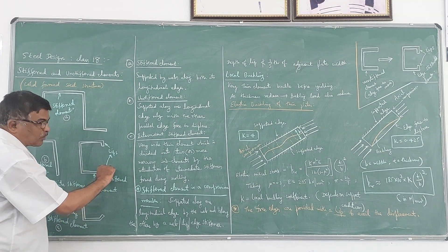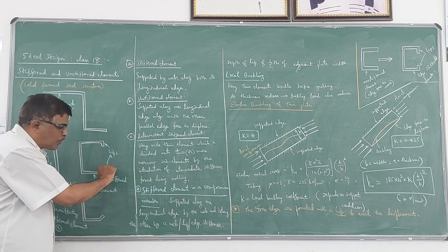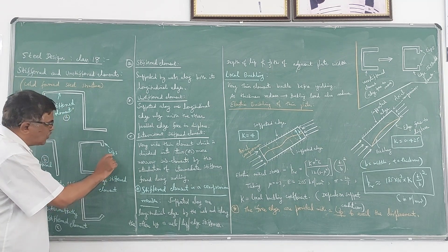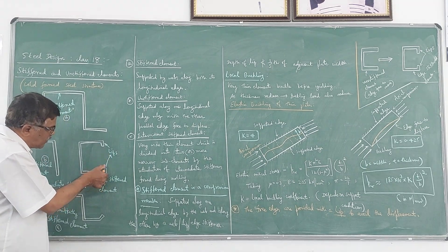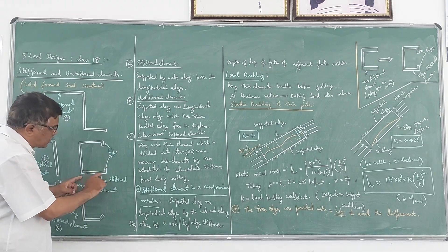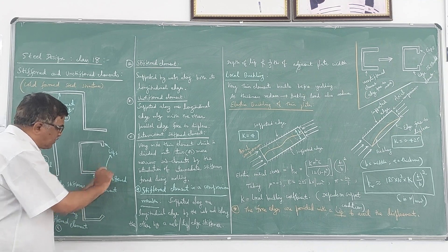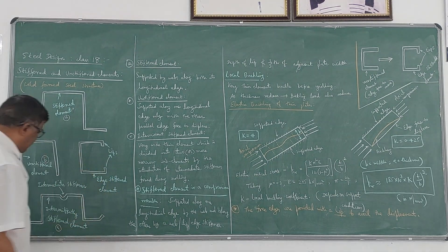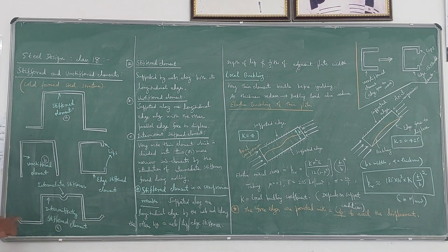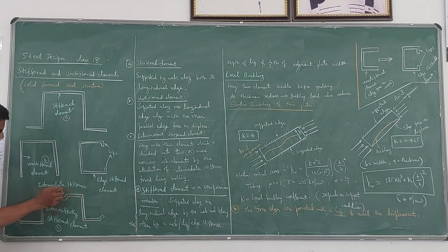Suppose if this lip is not provided, this is called unstiffened. If you provide the lip, it becomes an edge-stiffened element. And sometimes you may have to go for intermediate stiffeners.